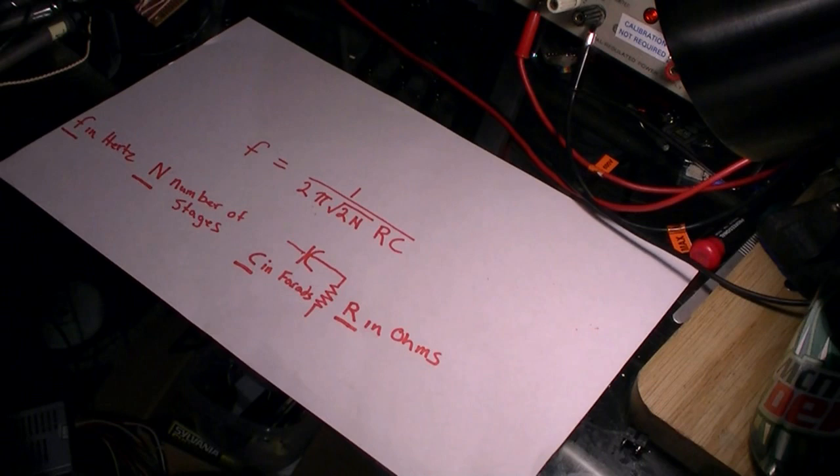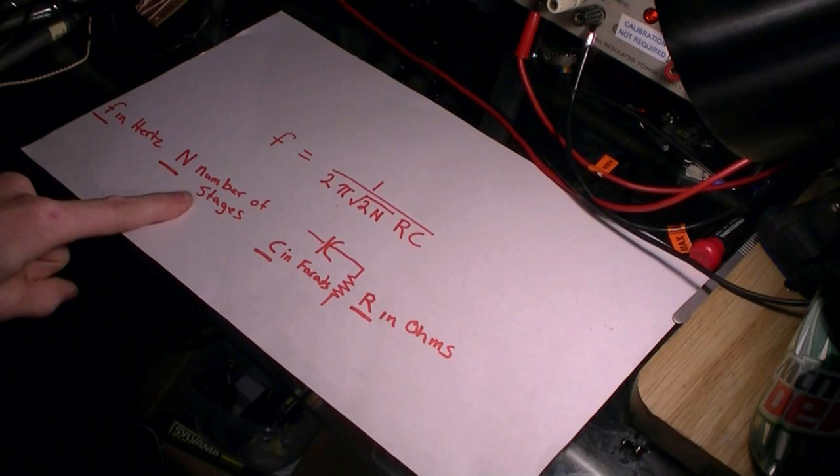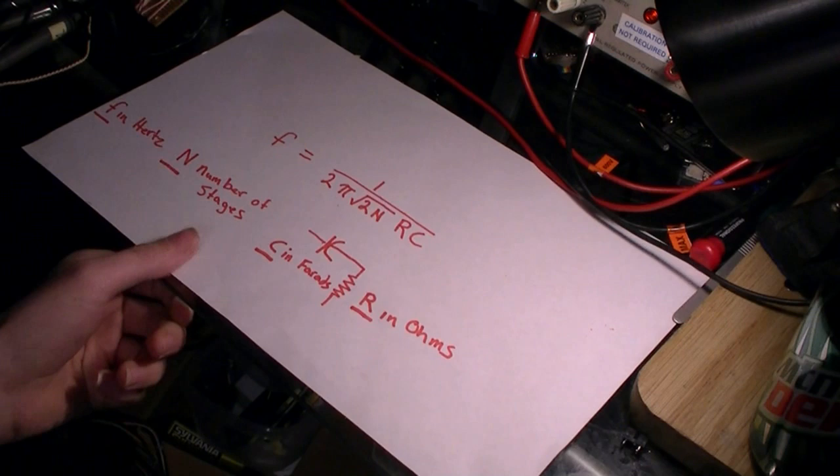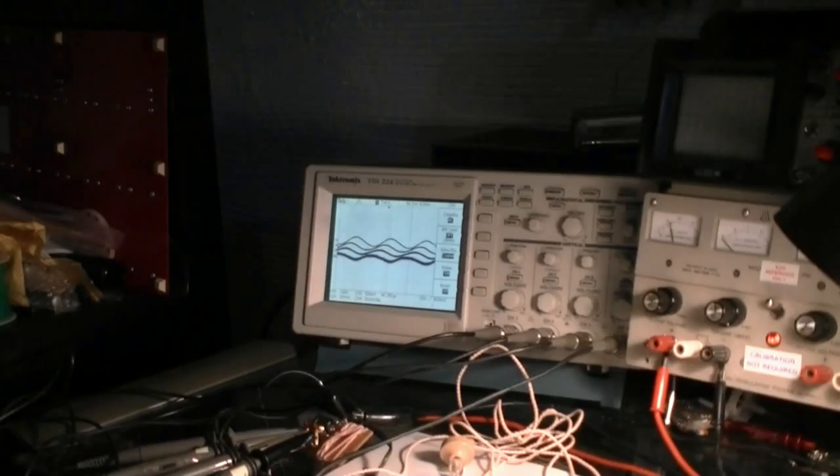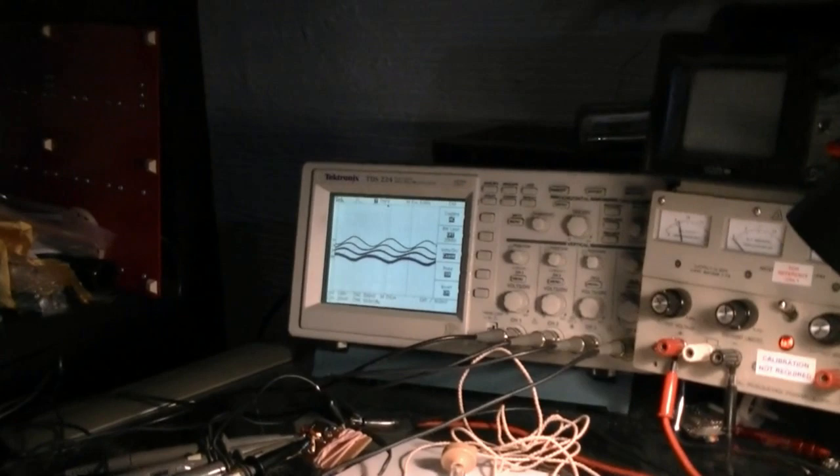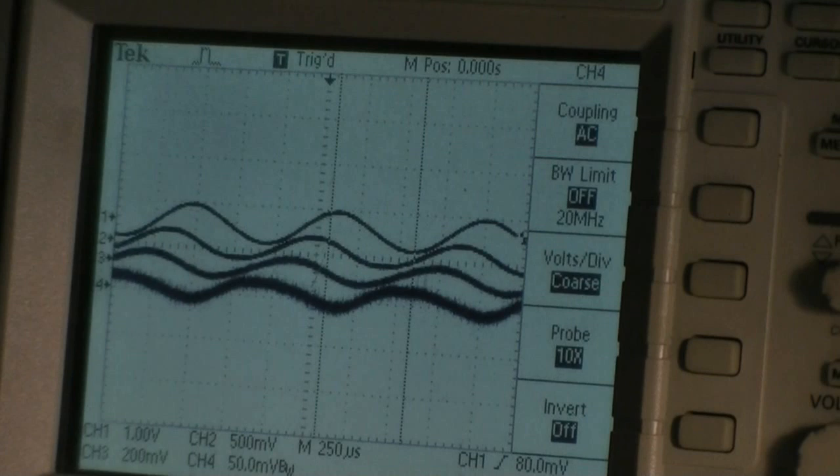This is the formula for calculating frequency in Hertz, number of delay stages, the capacitance in Farads, and the resistance in Ohms. This is only approximate because the input to the transistor, the loading of your output, will all affect the frequency that it oscillates at.